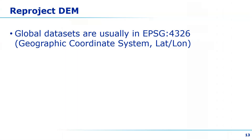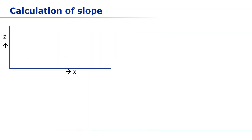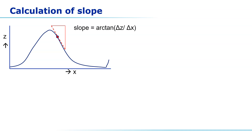An important step, especially when you have downloaded global DEM datasets, is to reproject the raster, because global datasets are usually in the geographic coordinate system with units in degrees. For the correct calculation of DEM derivatives like those needed in stream and catchment delineation, you should reproject to a projected coordinate reference system. Let's demonstrate this using a curve: on the x-axis we have distance and on the z-axis we have elevation. To know the slope of a point on the curve we draw a tangent line, then calculate the arc tangent of delta-z over delta-x. However when z is in meters and x is in degrees we will get wrong results — therefore reprojection is important.